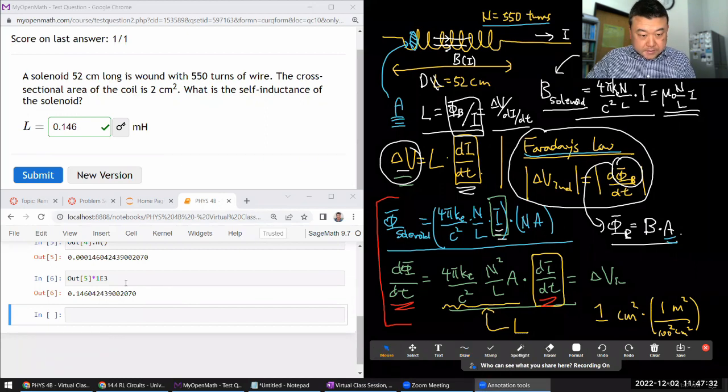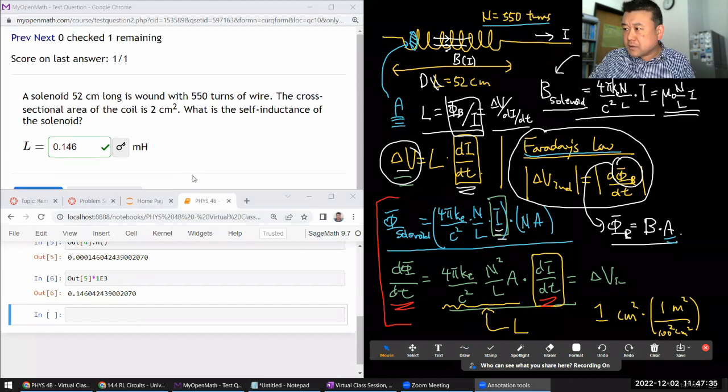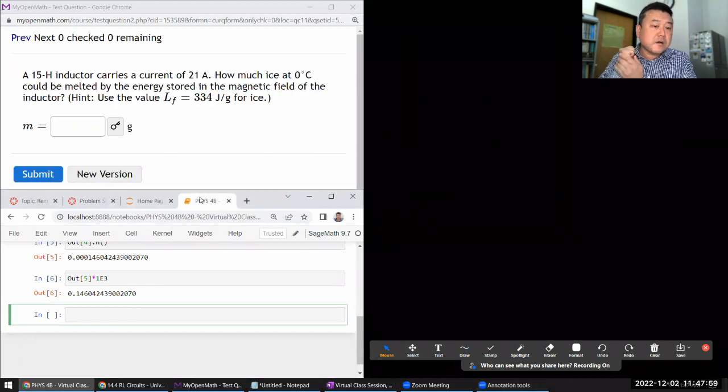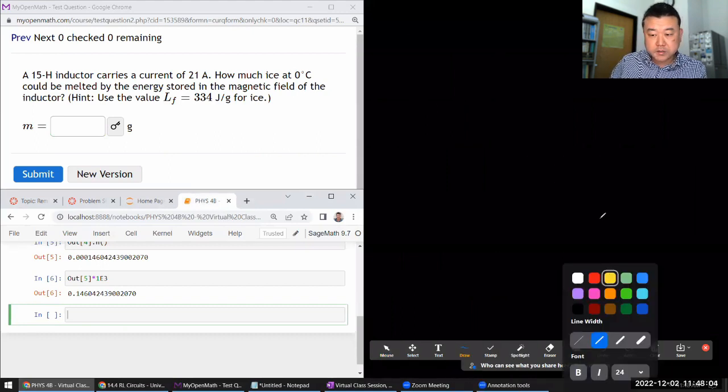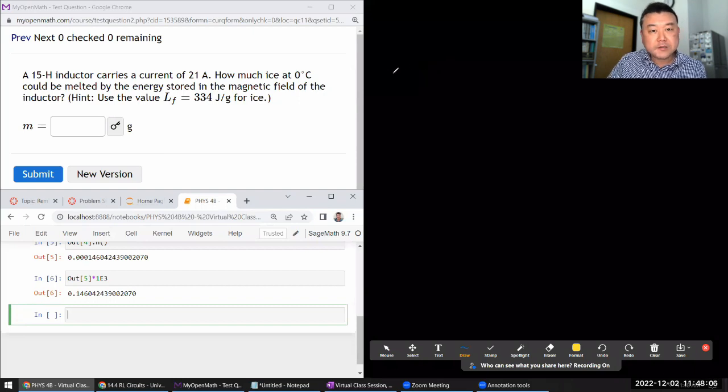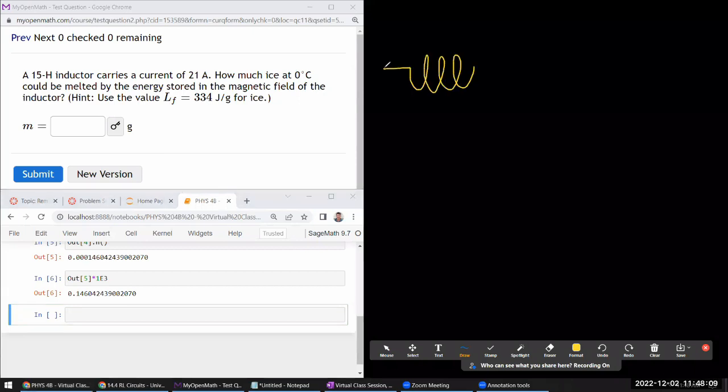Was that the last question? No. It says some inductor. Wow. That is a fairly large inductor. I don't know if I've ever seen 15 Henry inductor. It might be like some big industrial thing. It says some inductor with some amount of inductance carries some amount of current. How much ice at zero degrees could be melted by energy stored in the magnetic field of the inductor?